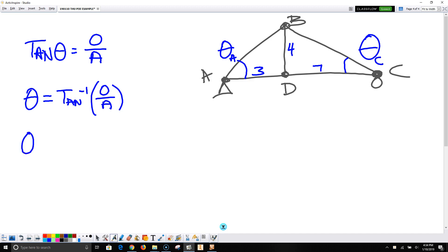Angle A is equal to tan to the negative, or the inverse function of tan. The opposite is 4, the adjacent is 3, and when we run that through a calculator, we get 53.13 degrees. That is right here, 53.13.